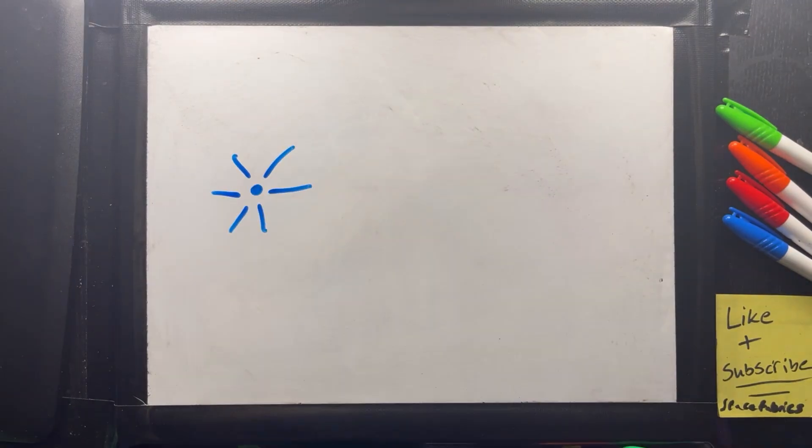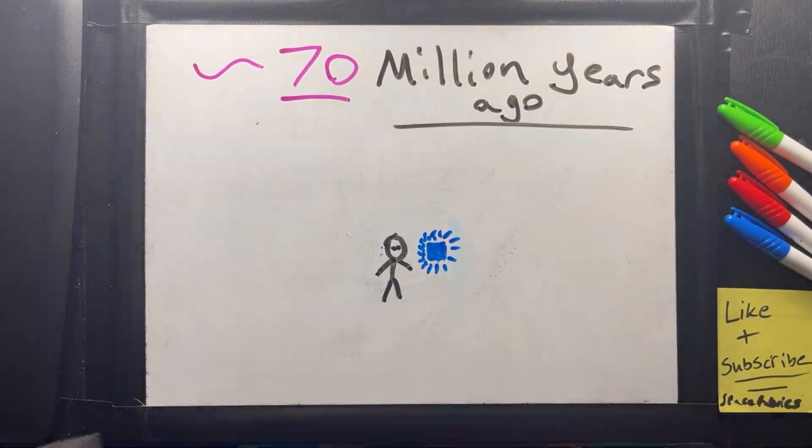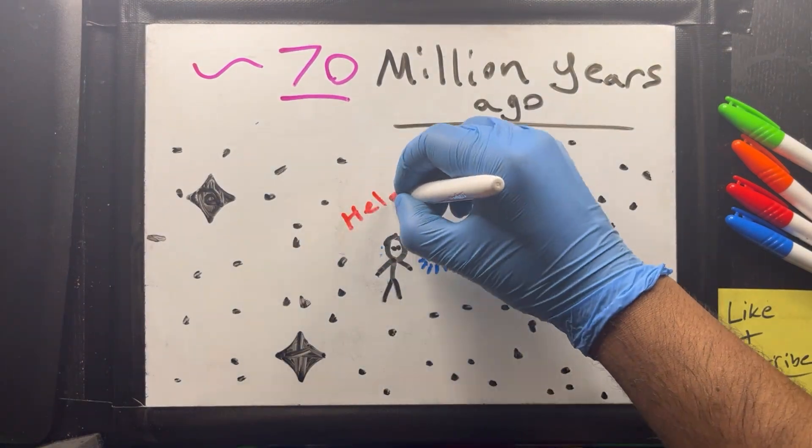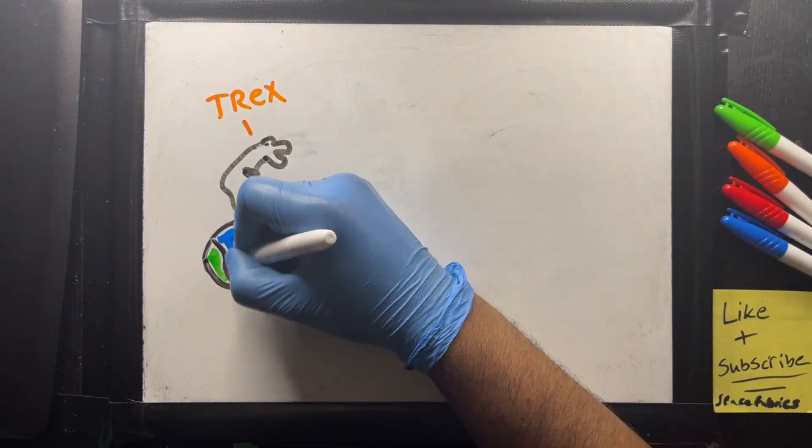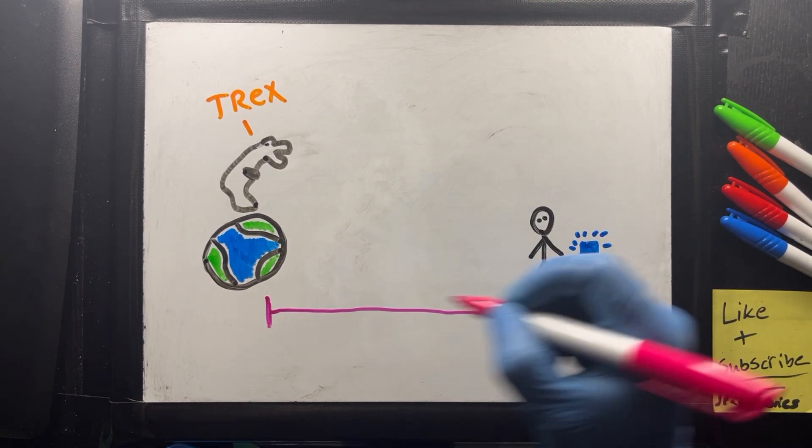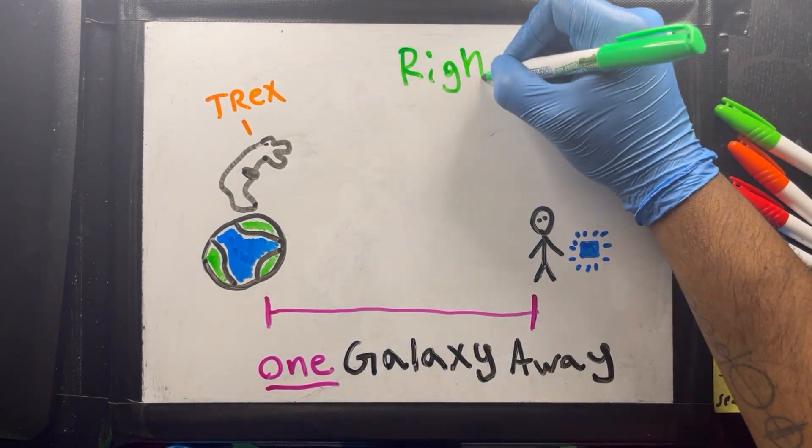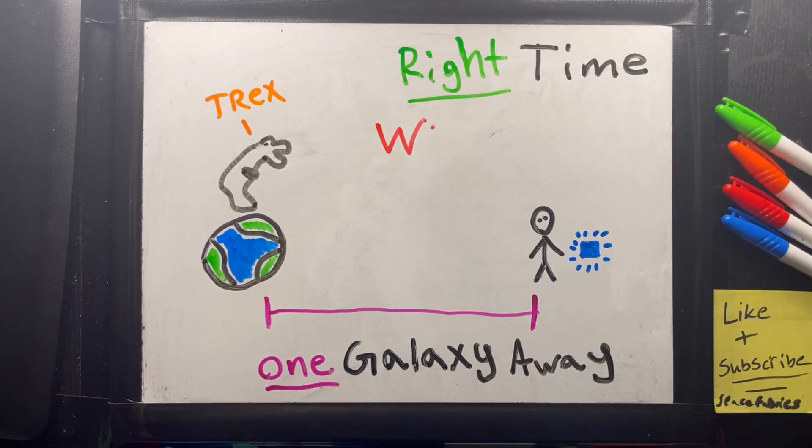And once you reach 70 million years ago, you are now in the vacuum of space nowhere near Earth. The T-Rex are alive during this time, but they are just on the other side of the galaxy where Earth was 70 million years ago. We got the right time, just not the right space and time.